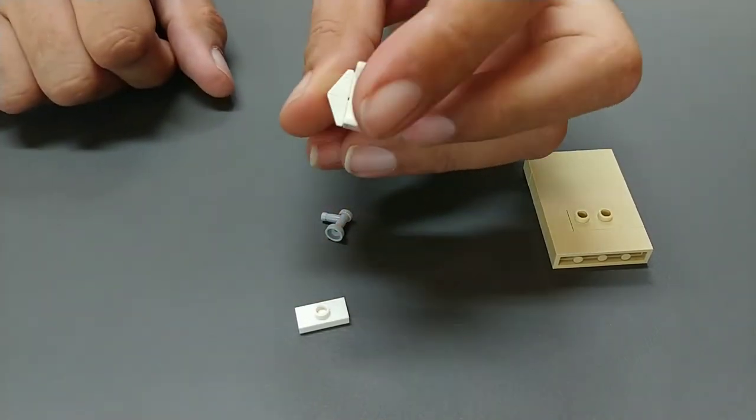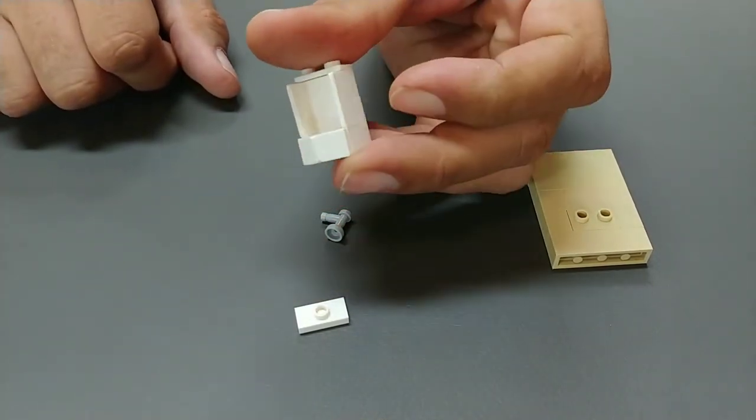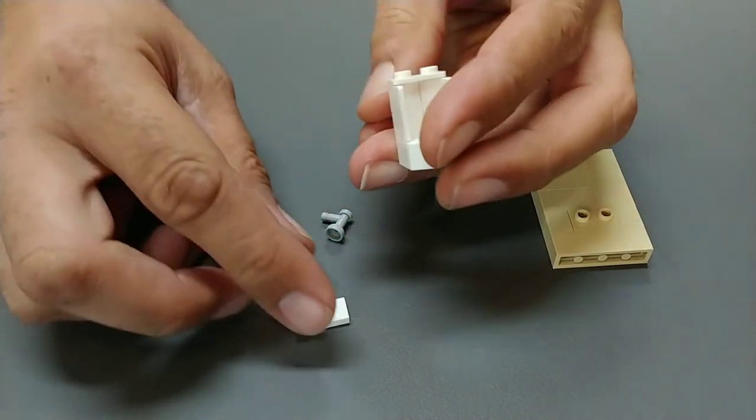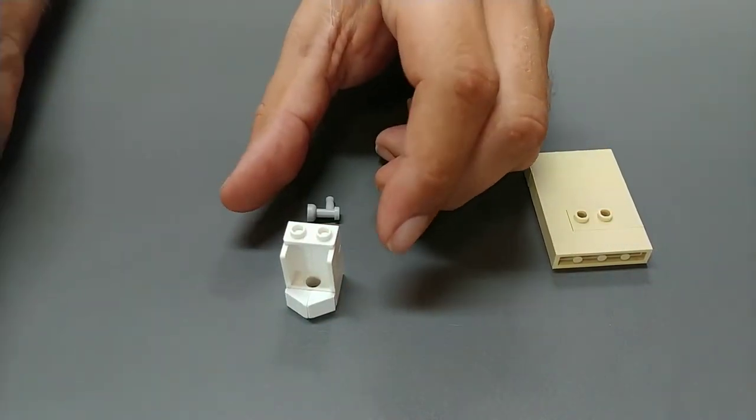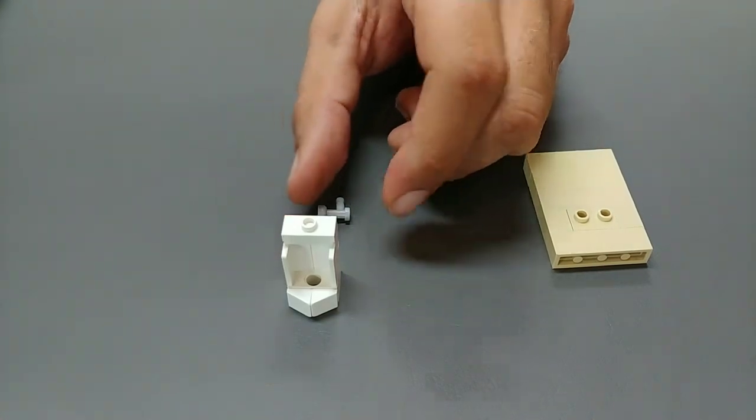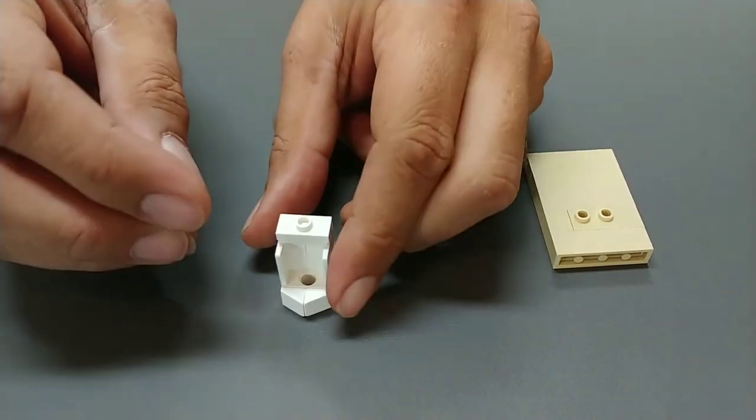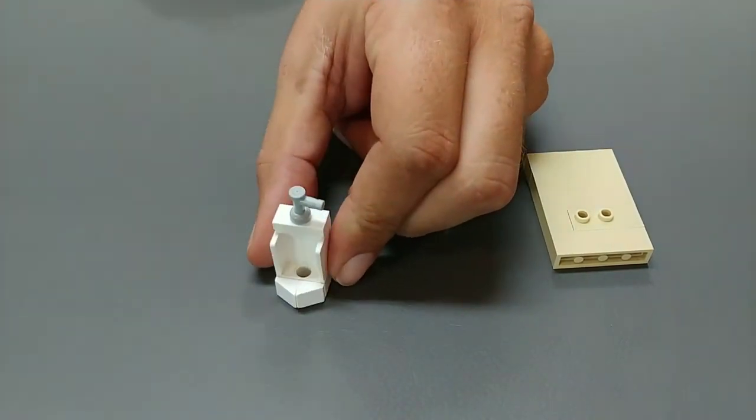So now you have a partial urinal, and then we take the jumper brick and put it on top, and we put the flusher handle on top like that.